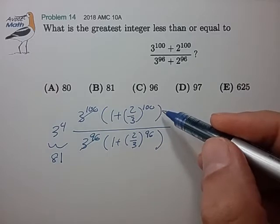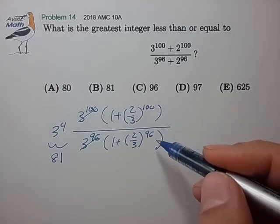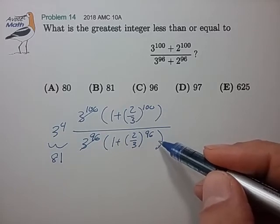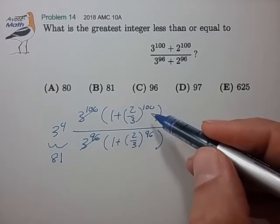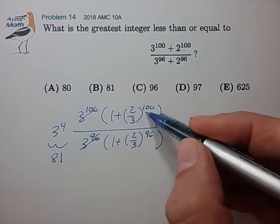And when we look at these other expressions, the numerator and the denominator, both of these are very close to 1. And in fact, the numerator is a little bit closer to 1 than the denominator because of the higher exponent.